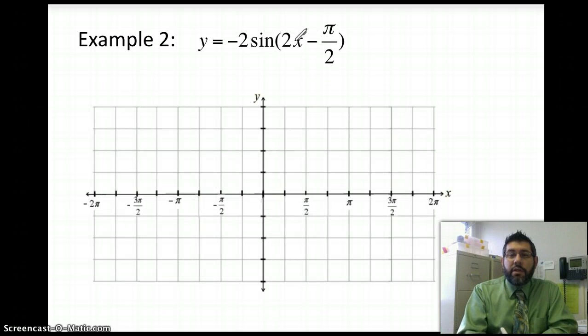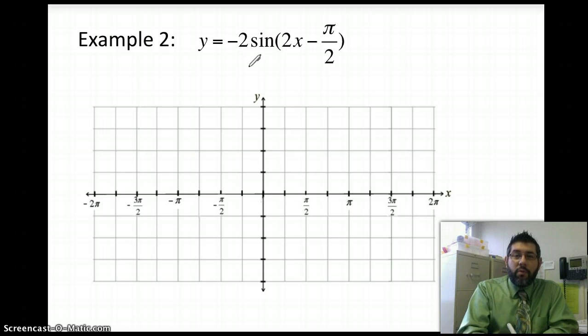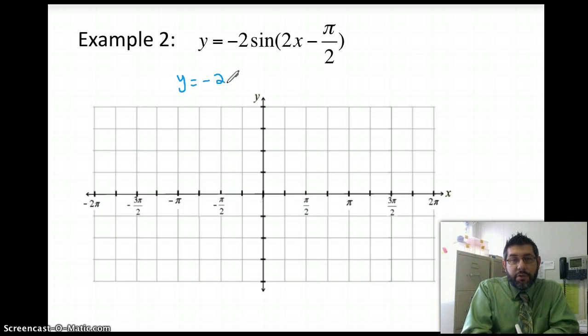So now we have a period change as well as a phase shift, and we also have a negative here. So what we need to do here is let's first find the period. And what we're going to do is we're going to graph y equals negative 2 sine of 2x. Then we're going to do our phase shift. So let's write over here, and this time in pink, in red here, this graph is going to be in red.